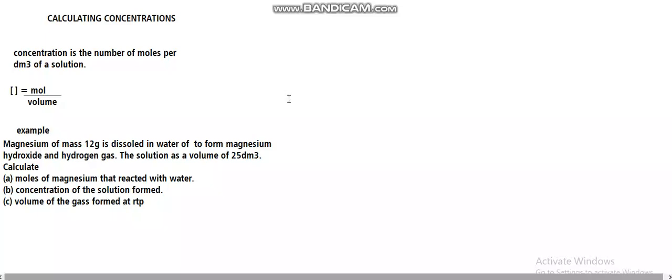Hello, welcome to this video on chemistry, looking at calculations of concentration. Concentration is the number of moles per decimetre cubed of a solution. You need to know that the symbols for concentration are square brackets — not curved but square.